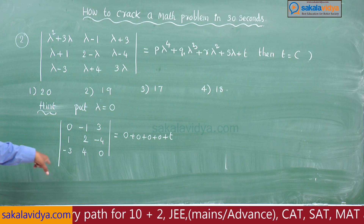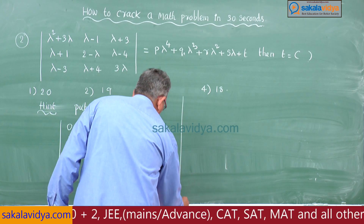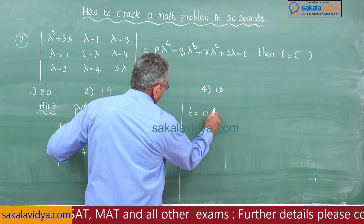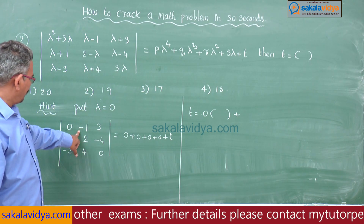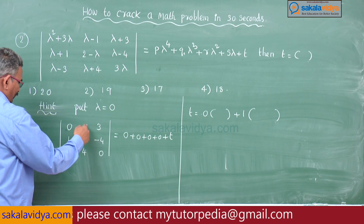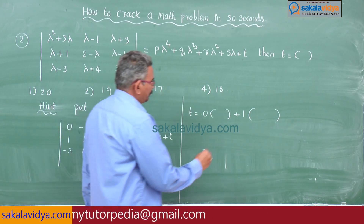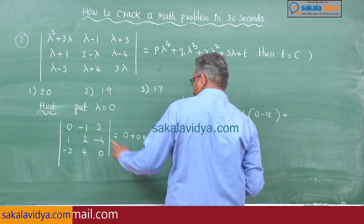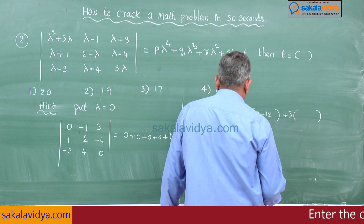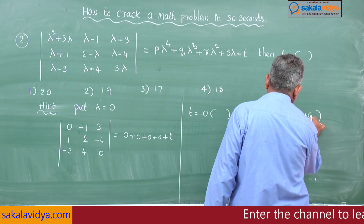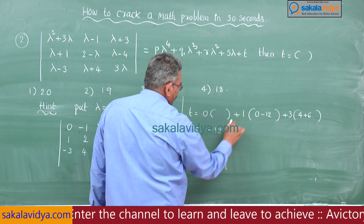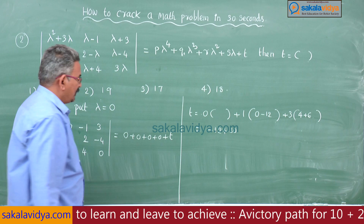So t is nothing but the determinant of that 3×3 matrix. Expanding: 0 multiplied by its cofactor, plus (−1) into its cofactor (deleting the row and column) gives 0 − (−12), plus 3 into (4 + 6). This gives −12 + 30, so 30 − 12 equals 18.